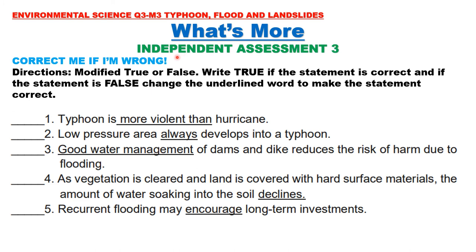Independent Assessment Three: 'Correct Me If I'm Wrong' — Modified true or false. Write true if the statement is correct; if false, change the underlined word to make it correct. Number one: typhoon is more violent than hurricane. Two: low pressure area always develops into a typhoon. Three: good water management of dams and dikes reduces the risk of harm due to flooding. Four: as vegetation is cleared and land is covered with hard surface materials, the amount of water soaking into the soil declines. Five: recurrent flooding may encourage long-term investments.